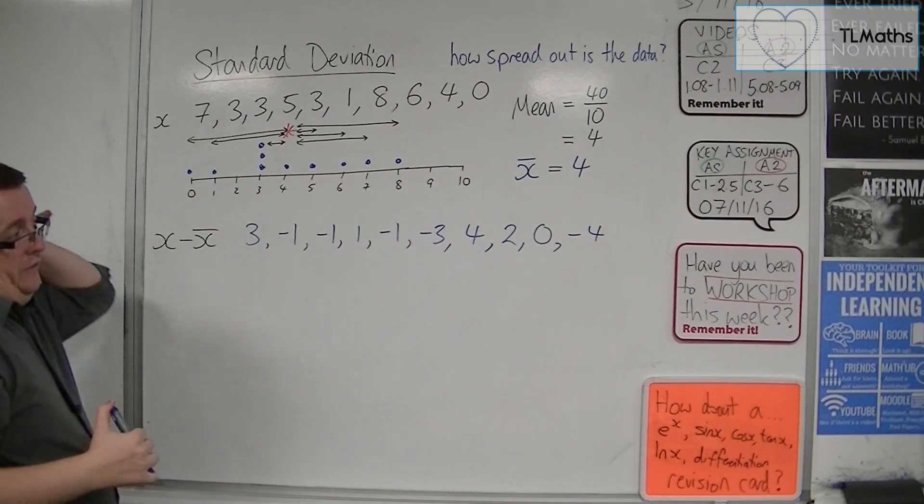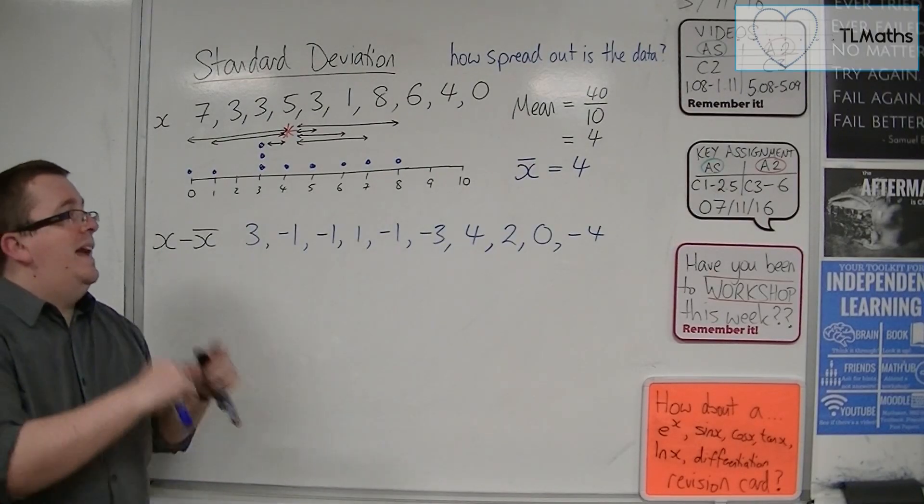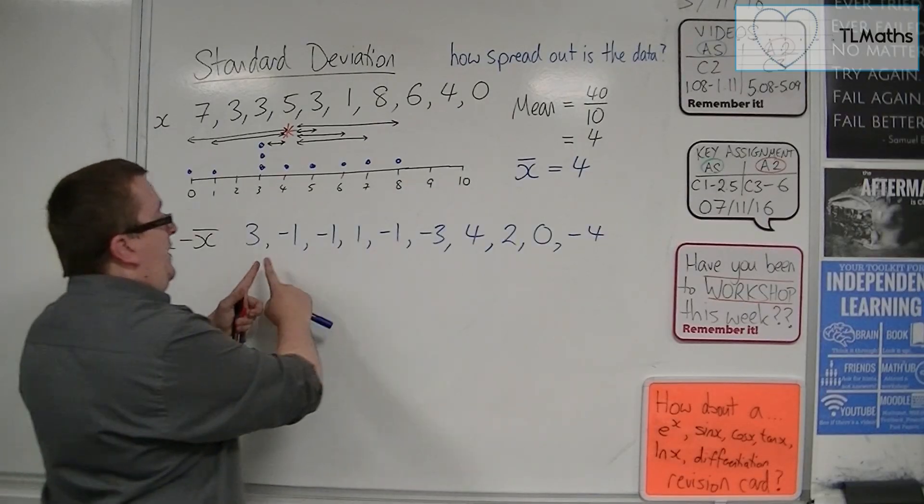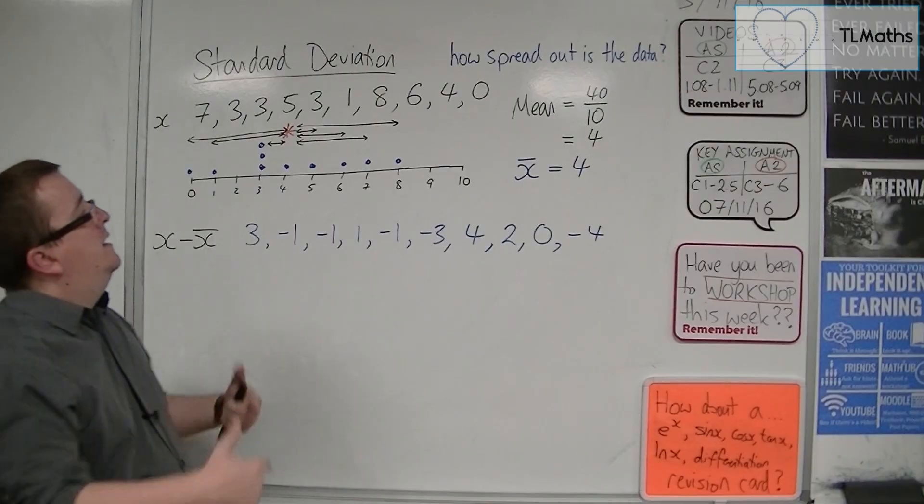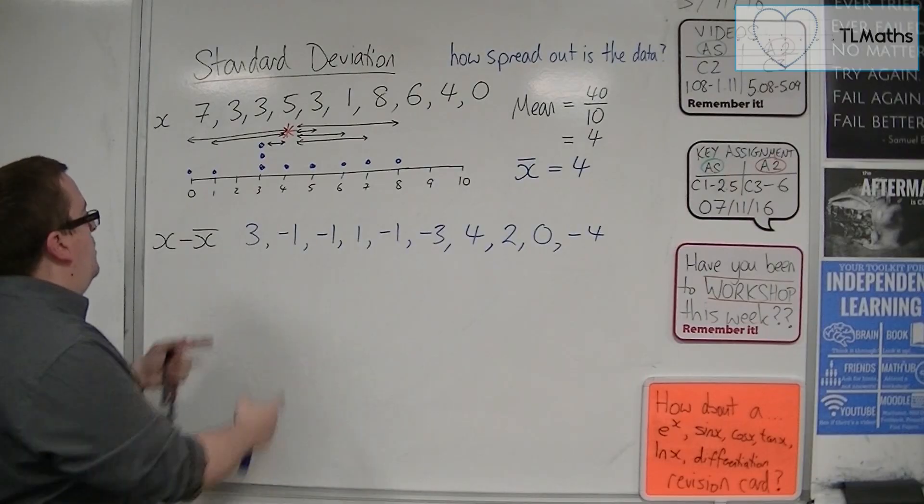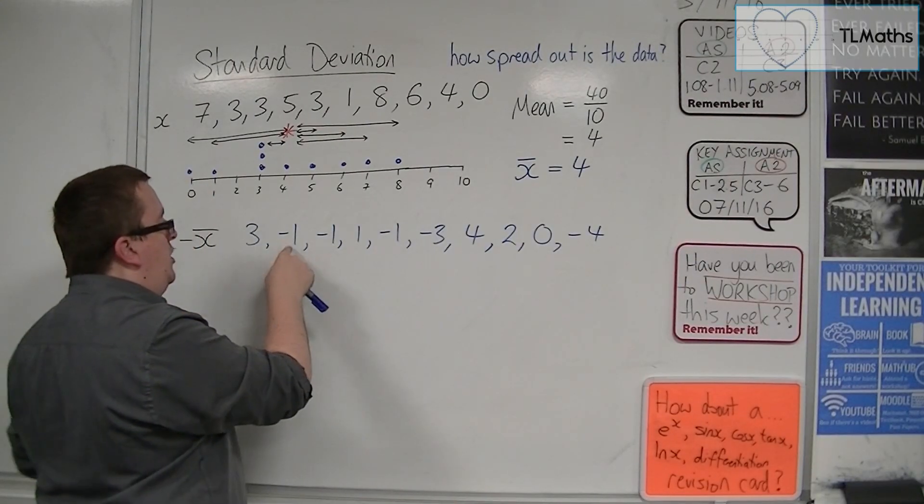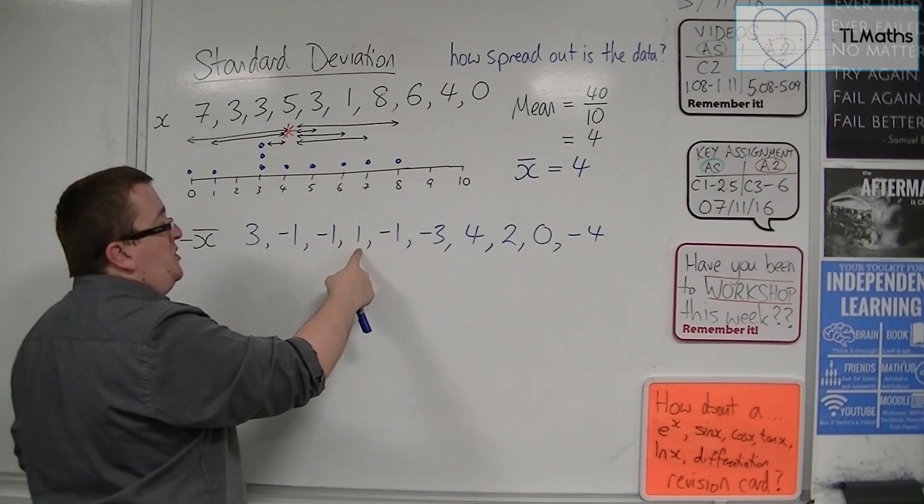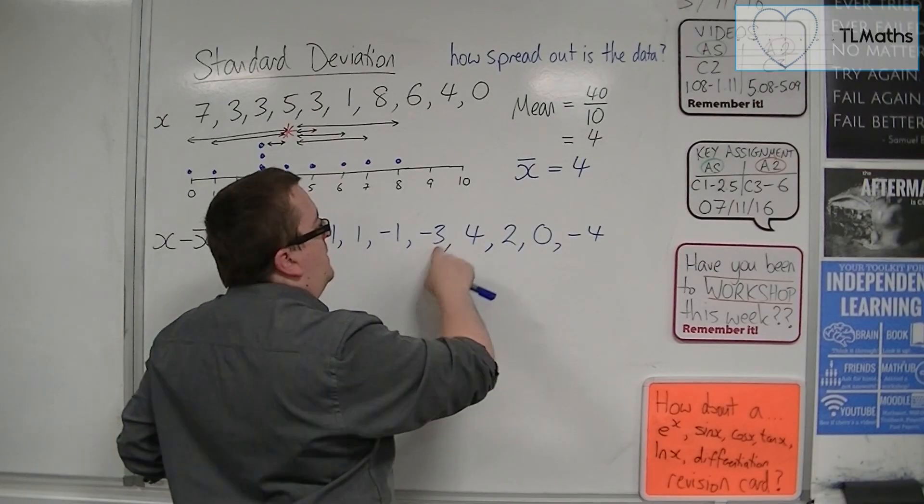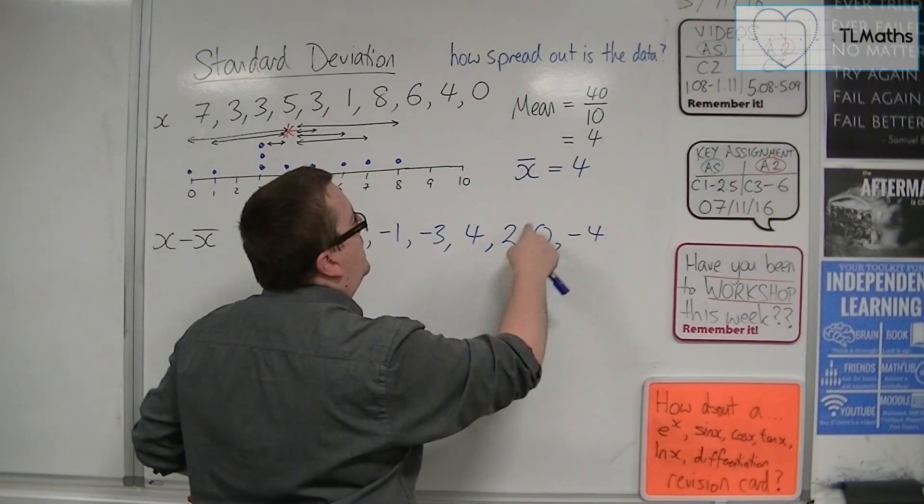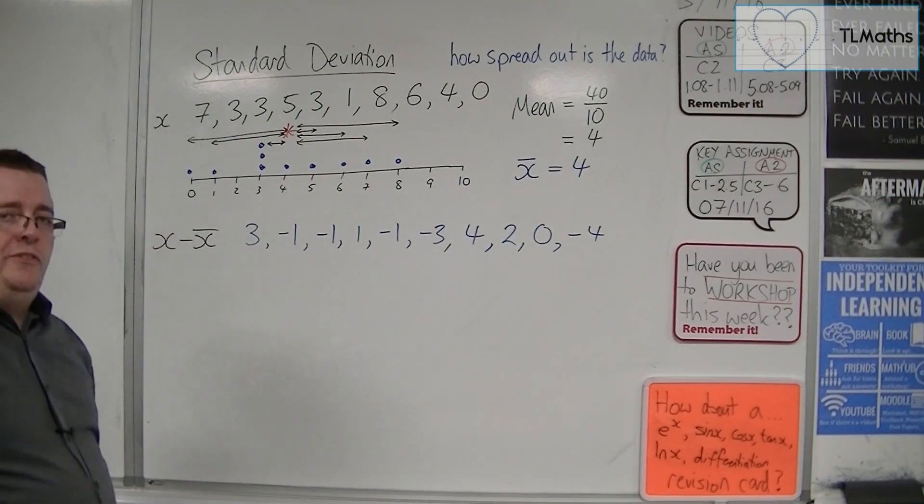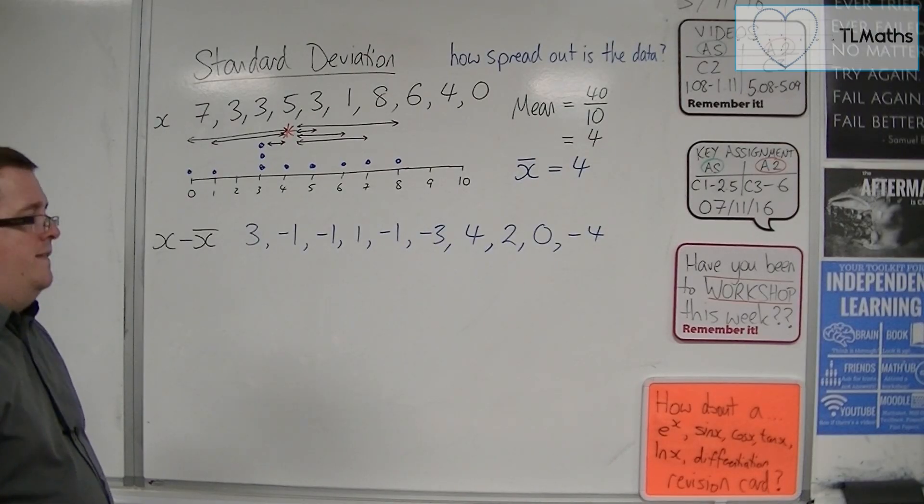Okay. So, I want to find the average distance away from the mean. So, it makes sense then that I'd add all those together and then divide by how many there are. It's an average after all. It's a mean. So, 3 take away 1, that gets me to 2. Take away another one is 1. Add 1 is 2. Then I go to 1, then I go to minus 2. Then I go to 2, then I go to 4. But then I go back to 0. So, then I've got 0. They all add up to 0. And I divide by 10 and that gets me 0.